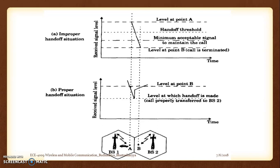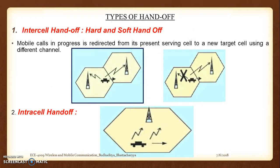We discussed what the criteria are for having an improper handoff and why we usually have an improper handoff. We also discussed what is meant by a proper margin and how we can have a proper handoff. From that we introduced the terms called hard and soft handoff.